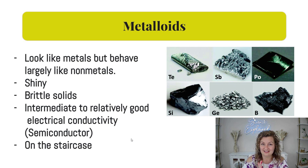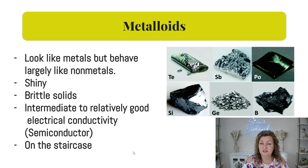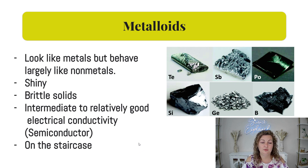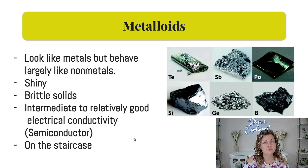Metalloids are the ones at the staircase — remember the zigzag line. They're going to look like metals, but they behave a lot like nonmetals, so they're kind of in between with a little bit of both. They're going to be shiny or lustrous to look at, but they're going to be brittle, which is kind of weird for something that looks like a metal, because that is a trait of a nonmetal. They're intermediate when it comes to transferring heat and electricity — in fact, we call them semiconductors. They can conduct electricity and heat, but just not as well as a metal can. We use them for a lot of special applications, especially in electronics, and they are found on the zigzag line.